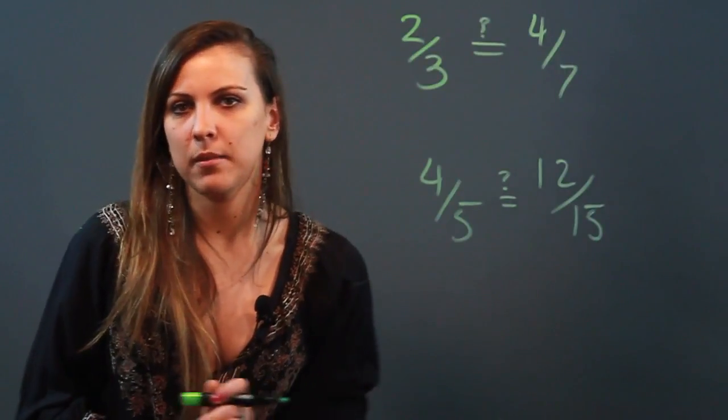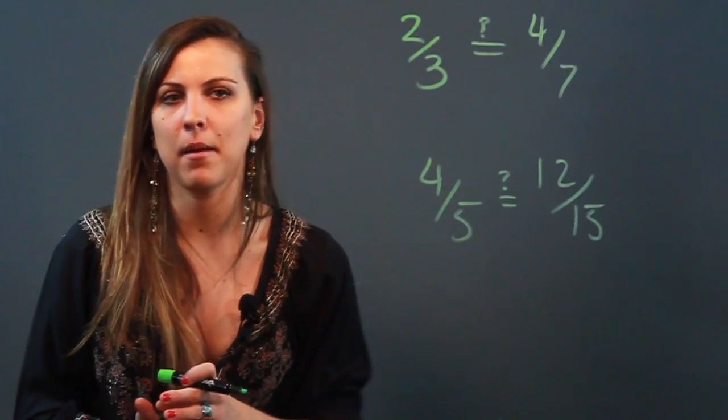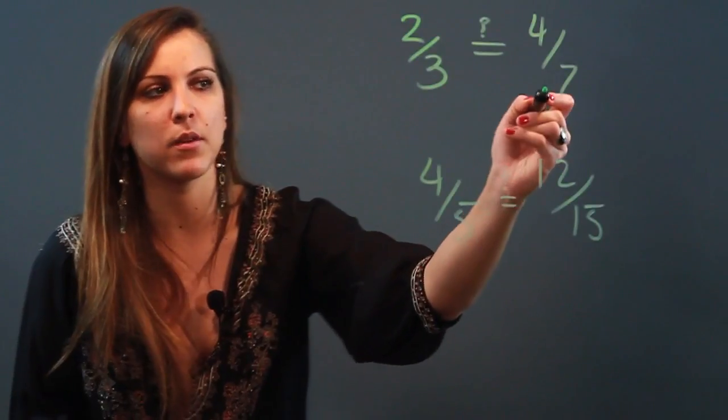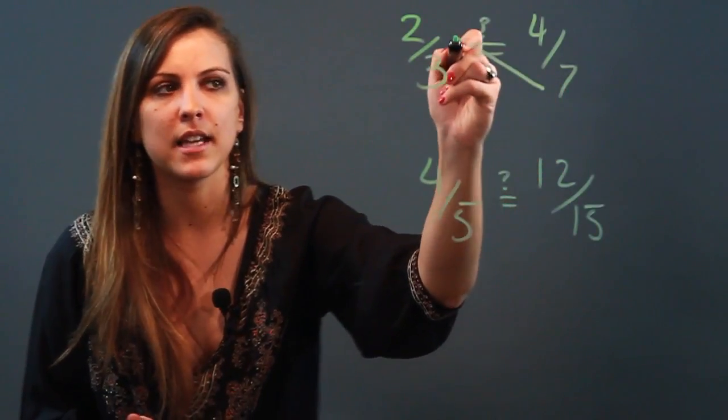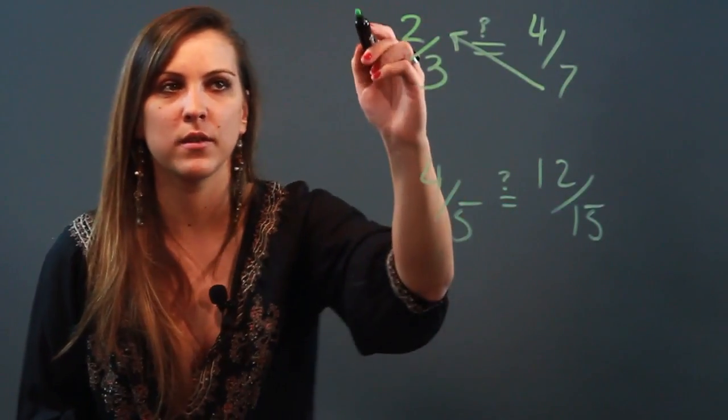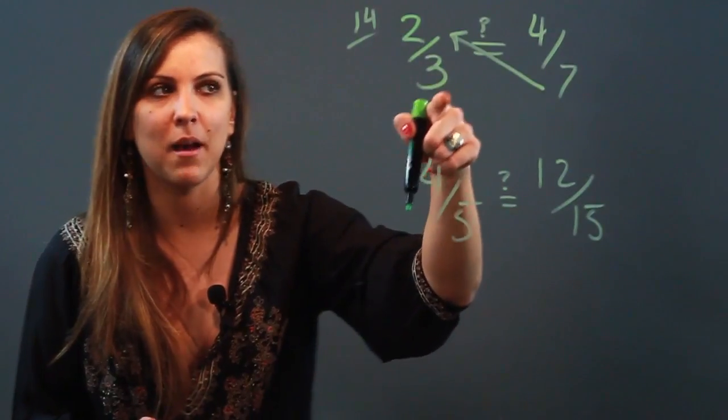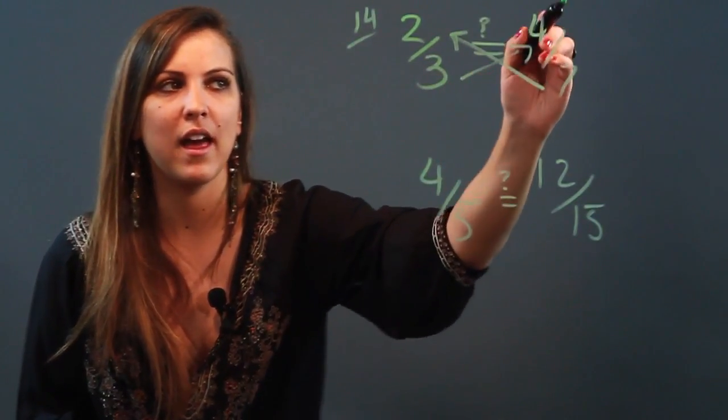The easiest way to tell is to simply cross-multiply and look at my products. So when I say cross-multiply, I mean this denominator times this numerator. When I do that, I get fourteen. And then this denominator times this numerator, when I do that, I get twelve.